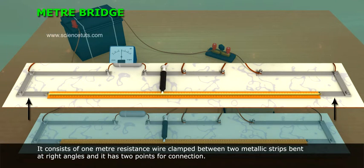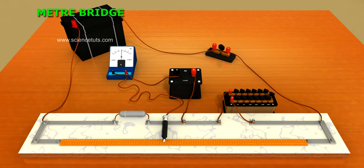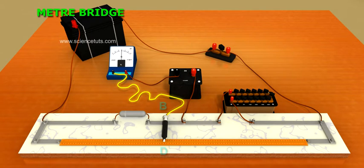between two metallic strips bent at right angles and it has two points for connection. There are two gaps. In one of them a known resistance, whose value is to be determined, is connected. The galvanometer is connected with the help of jockey across BD